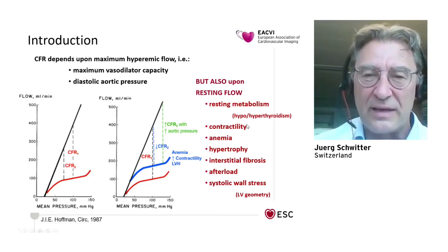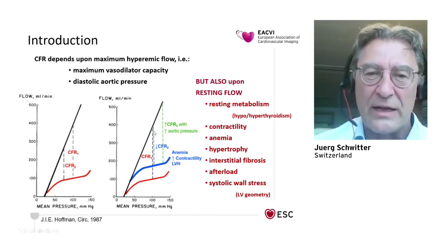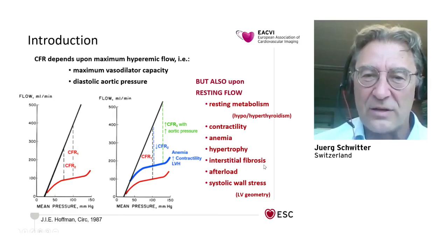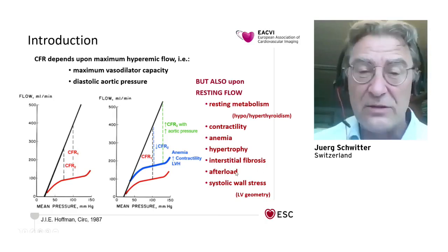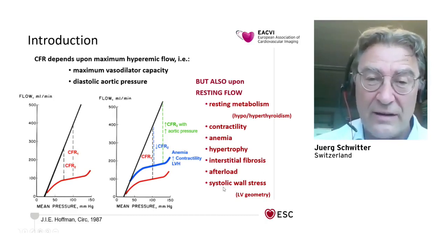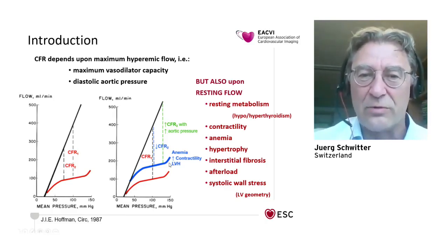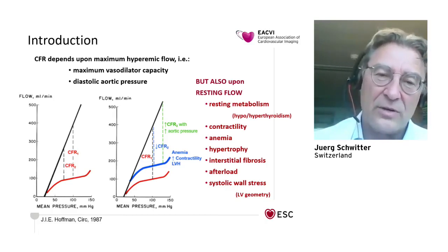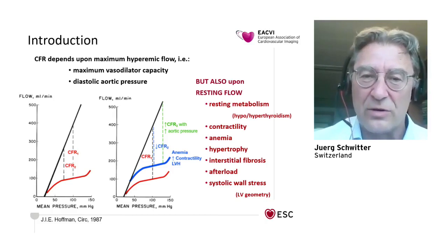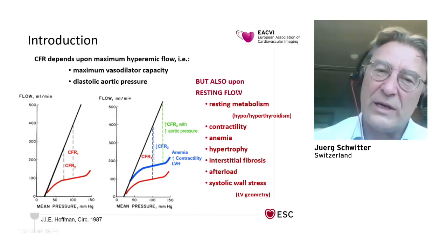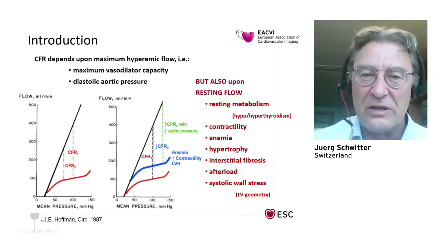High contractility and sympathetic drive will increase baseline flow and reduce coronary flow reserve, which has nothing to do with the dilatory capacity of the capillaries - it's just higher baseline flow from higher contractility. Higher flow from anemia, hypertrophy, interstitial fibrosis, and systolic wall stress all contribute. If you have high systolic wall stress with a large ventricle, you have higher baseline and smaller coronary flow reserve. Similarly, higher heart rates increase baseline flow and decrease coronary flow reserve. These interactions make coronary flow reserve quite complicated to interpret in isolation.